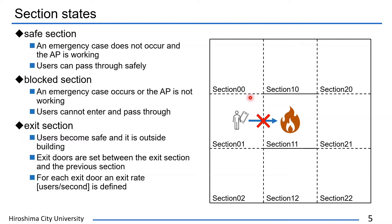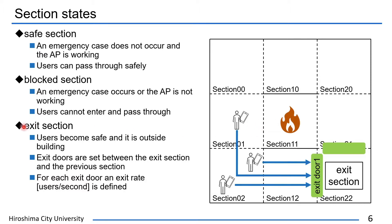In this figure, there is a fire in section 11, so that users in section 1 cannot enter section 11. Third, the state becomes an exit section where users become safe and it is outside the building. Exit doors are set between the exit section and the previous section. For each exit door, an exit rate in users per second is defined. It determines how many users can leave a section per time unit. In this figure, it can be expected that users will be congested in section 12 by exit door 1.